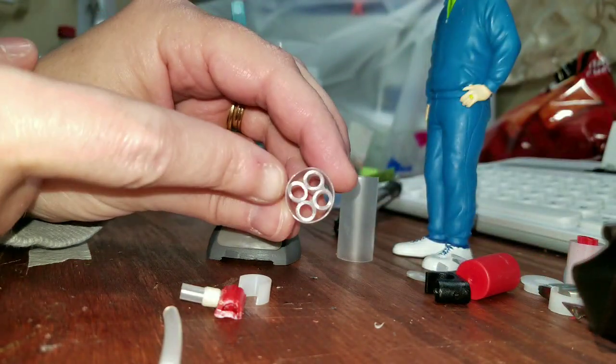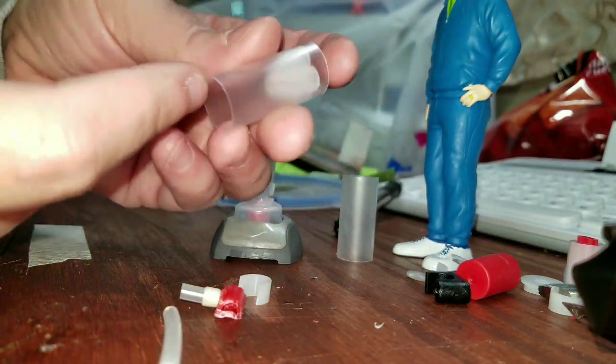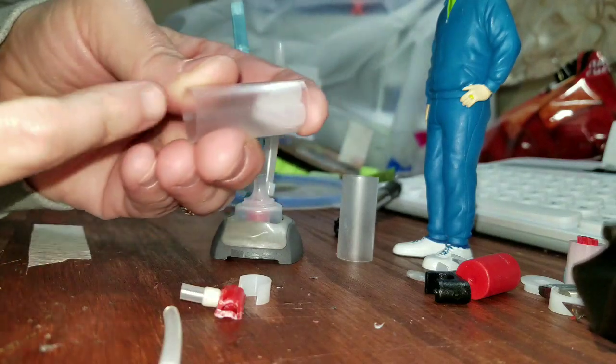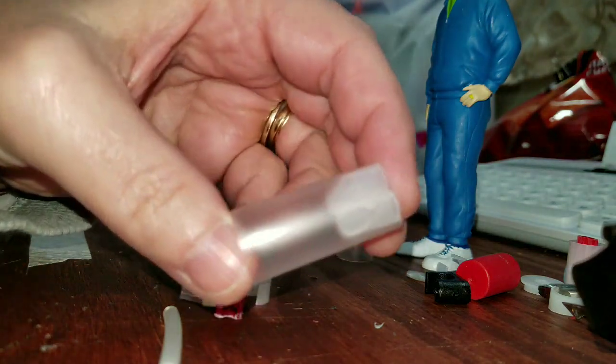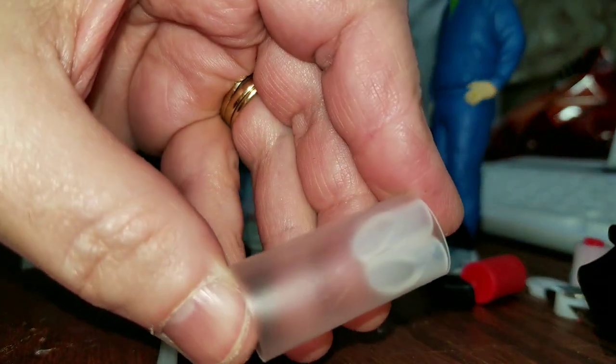Then you want to cut the end of it off on an angle and glue two together. Once you have two together, then you're going to slide them down inside there. You can paint them if you like, you don't have to. So you want to slide them in there and then it should look like this.